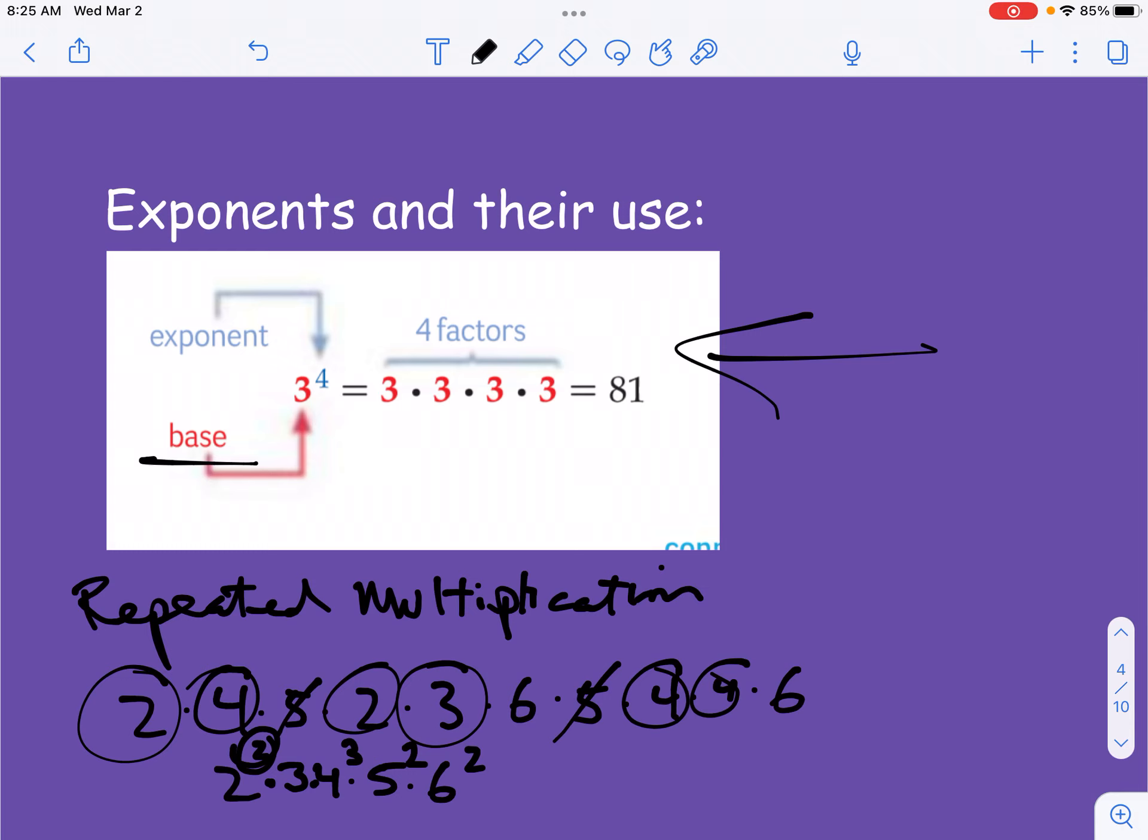So if somebody comes up to you and says, hey, you've got 4 to the 3rd, what is this? You should, you know, don't just leave it like that. You should be like, well, it's 4 times 4 times 4. So we've got 4 three times. 1, 2, 3 times. That's where that 3rd comes from. And then you just multiply it. 4 times 4 is 16, and 16 times 4 is 64.